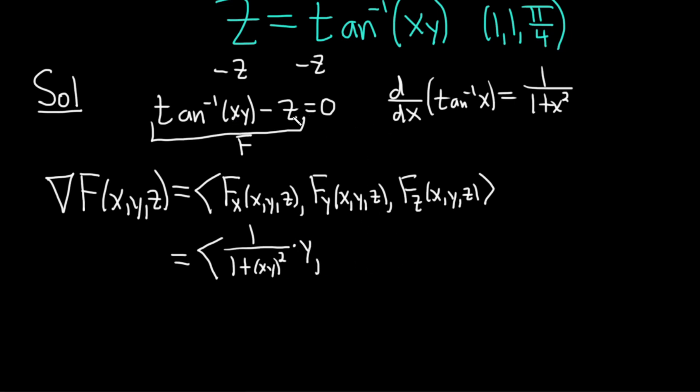The derivative of z is 0, right? Because when you're taking the partial with respect to x, everything else is constant. The z is constant, so it's 0. The y is constant. So when you take the derivative of the inside, the derivative of x is 1 and the y is a constant. It just hangs out.